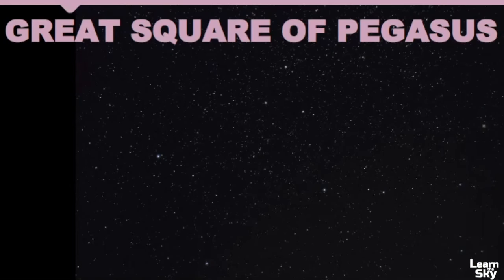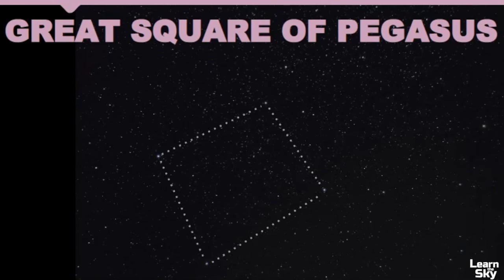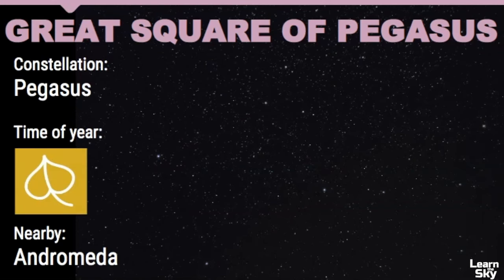Next we'll review the autumn asterisms and we'll start with the Great Square of Pegasus. Out of all the star patterns easily visible in the autumn sky, Pegasus really stands out because of its easy pattern and very large size in the sky. Here is this asterism with the four bright stars of Pegasus connected, and then here are the other parts of the constellation. Pegasus is a great way to find many other constellations — I use it to help me find Pisces, Delphinus, and Andromeda. The Great Square of Pegasus is a great star pattern to help you find other patterns in the sky.